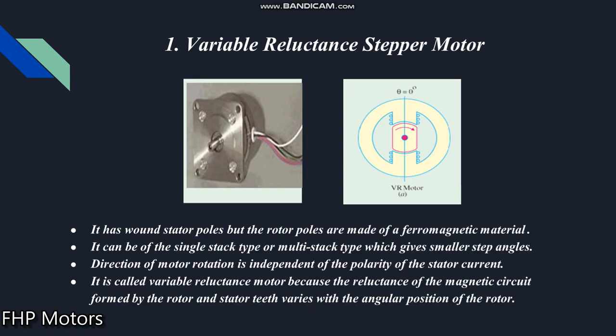First is the variable reluctance stepper motor. The stator of this motor has wound poles and the rotor poles are of ferromagnetic material. This motor can be either single stack type or multi stack type, meaning the stator poles and rotor poles are either single or multiple. If the motor is multi stack, it gives smaller step angles, and the direction of rotation of this type of motor does not depend on the polarity of stator current. It is called a variable reluctance motor because the reluctance of the magnetic circuit formed by the rotor and stator varies with the angular position of the rotor.